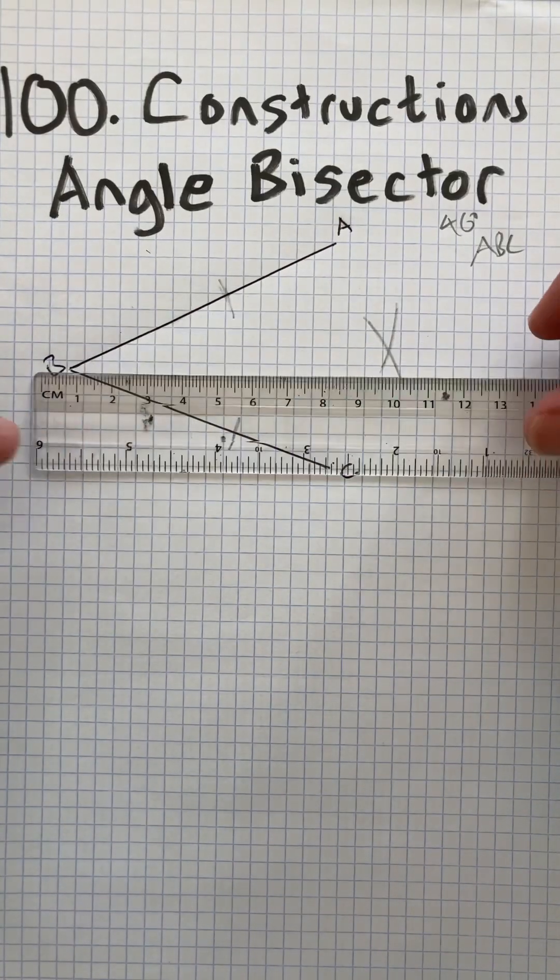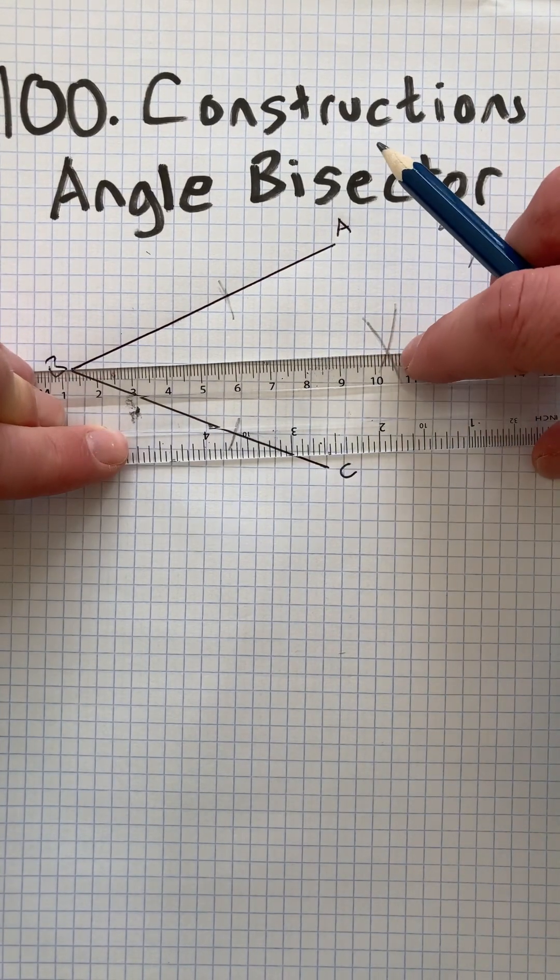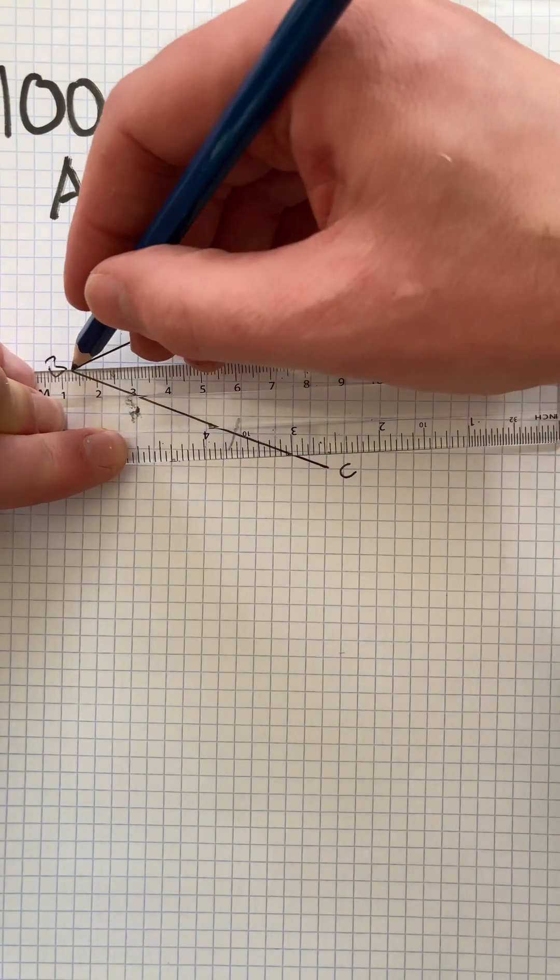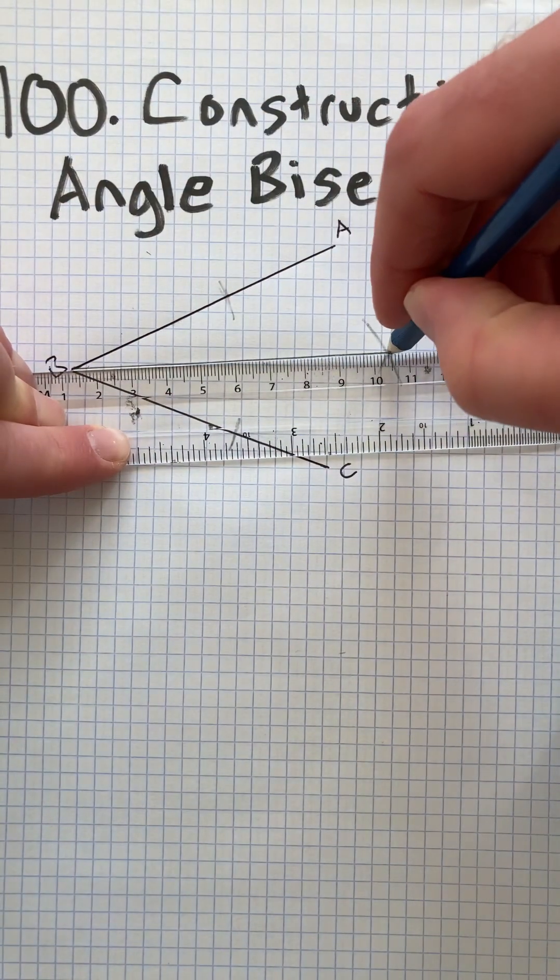Now take a ruler, go from that original angle straight to where those arcs cross. That straight line will bisect the angle.